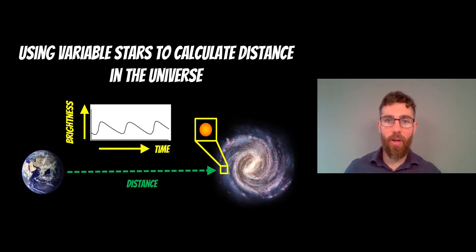Welcome to this video. In this video, I want to have a look at one of the methods we can use for calculating distance in the universe, and it's using variable stars. Variable stars are those that change their output, so they will appear brighter and dimmer. They typically have a very regular pattern or period in which they do that, and that is useful for calculating a distance.